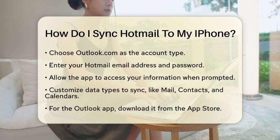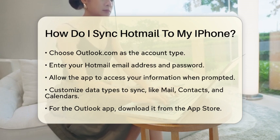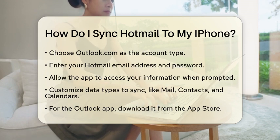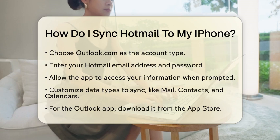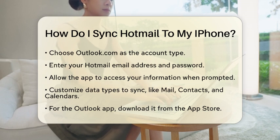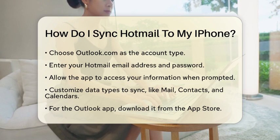Tap on that and then select Outlook.com as the type of account you want to add. Now, it's time to enter your Hotmail email address and password. After entering your credentials, you may receive a prompt asking if you want to allow the application to access your information. Simply tap Yes to proceed. Once your account is added, you can customize which data types you want to sync, such as Mail, Contacts, and Calendars. You can find these options in the Account settings.